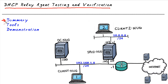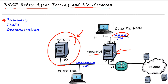Number one, we have DC-Nug with a DHCP scope supporting the 10 network — that's set up and configured. We set up routing on Server 2 so it will be willing to route between the 10 network and the 192.168.1 network, and we also enabled the DHCP relay agent to be listening on interface Ethernet 1, and that's where we left it.